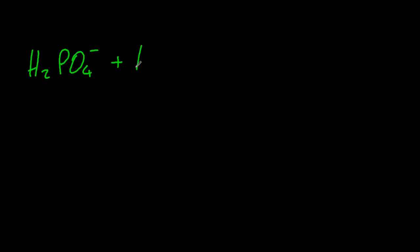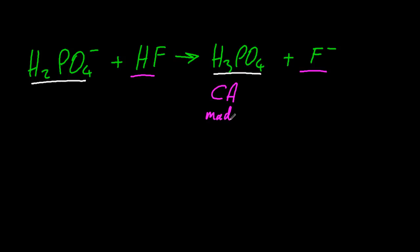So these things can both be acidic, but let's see which one's behaving as an acid and a base and how it's all going to work out. H2PO4-, that seems to turn it to H3PO4. So that's the conjugate acid. It's made by adding a proton. So the fluoride must be the conjugate base, made by removing a proton. These are always on the product side, the conjugate acid and conjugate base.